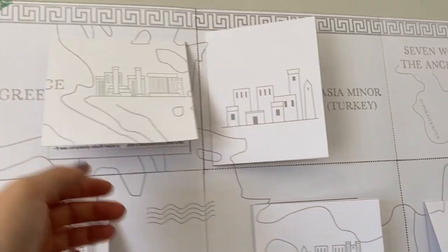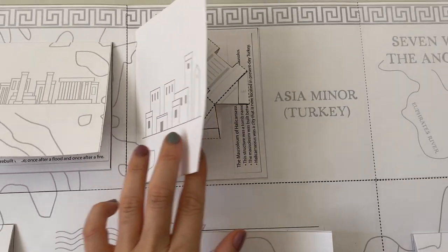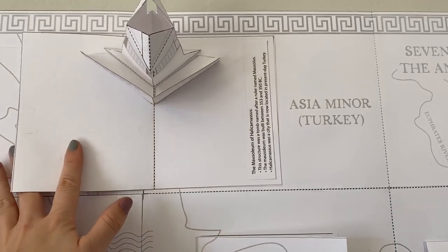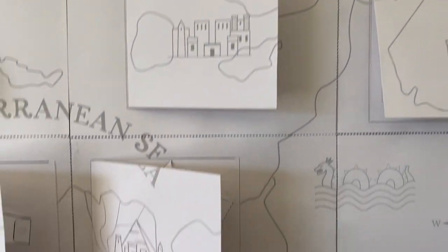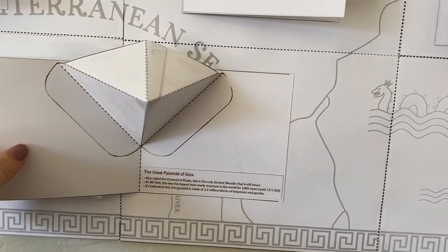Today we're going to make the Statue of Zeus at the Temple of Zeus in Olympia. What's cool about all these pops is we can put them together and it combines to form a giant map of the ancient world. You can see where all these seven wonders used to be. There's only one that's still left.